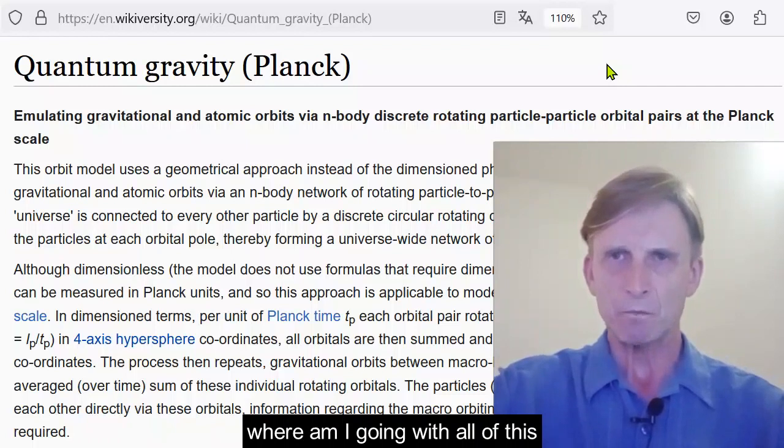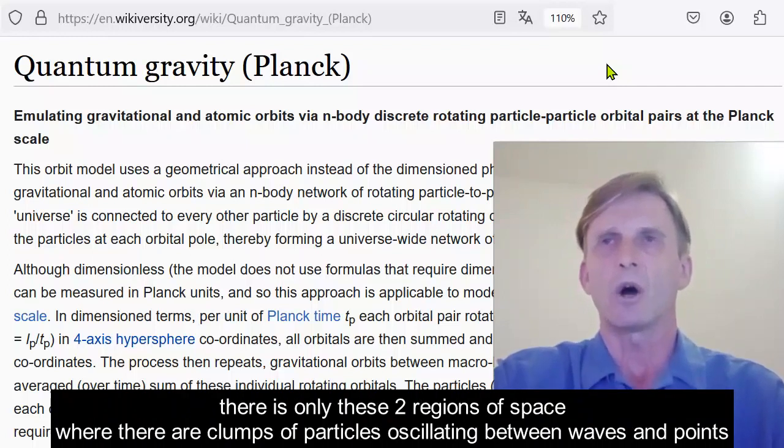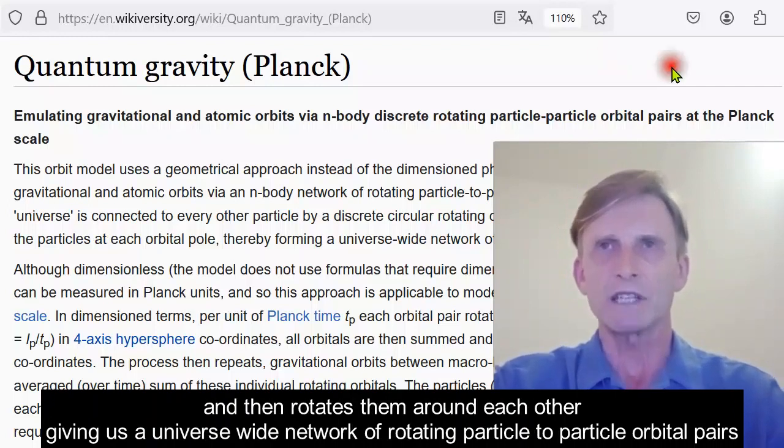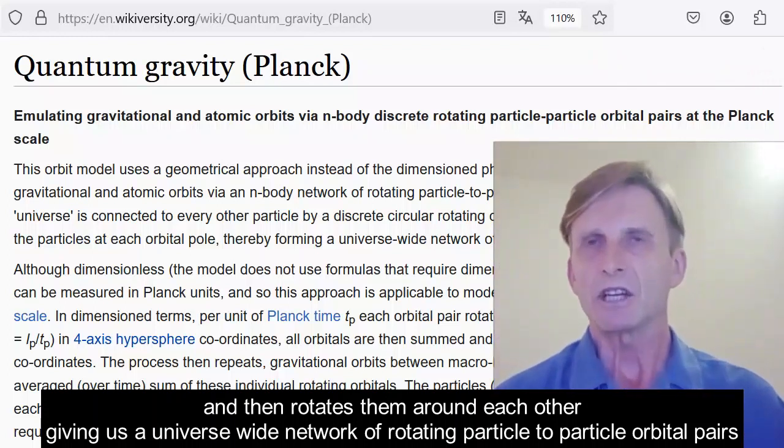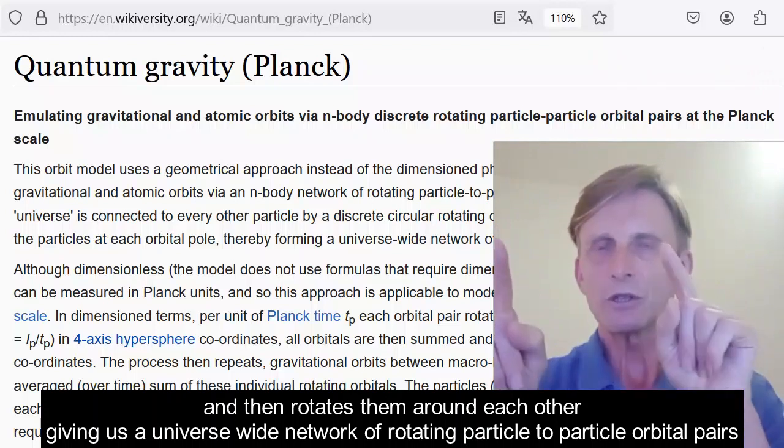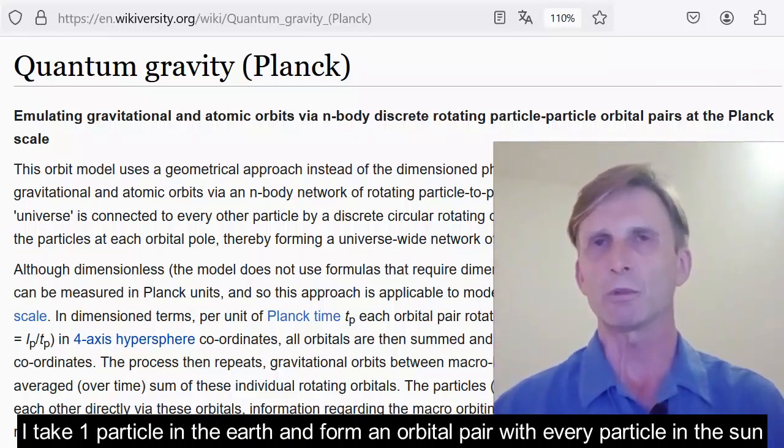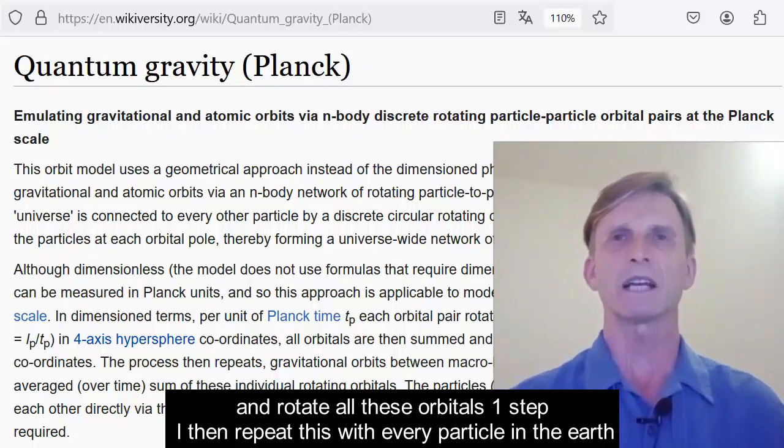Where am I going with all of this? At the Planck scale, there is no Earth or Sun, massive or otherwise. There's only these two regions of space where there are clumps of particles oscillating between waves and points. The simulation works at Planck time. So what it does is it takes all the particle points for that one unit of time and then rotates them around each other, like this rotator, giving us a universe-wide network of rotating particle-to-particle orbital pairs. I take one particle in the Earth and form an orbital pair with every particle in the Sun and rotate all these orbitals one step. I then repeat this with every particle in the Earth.